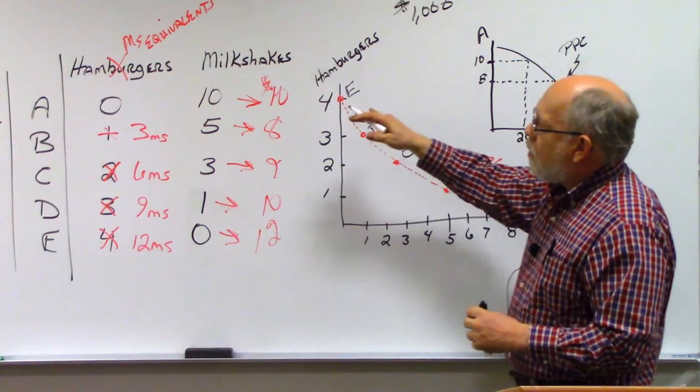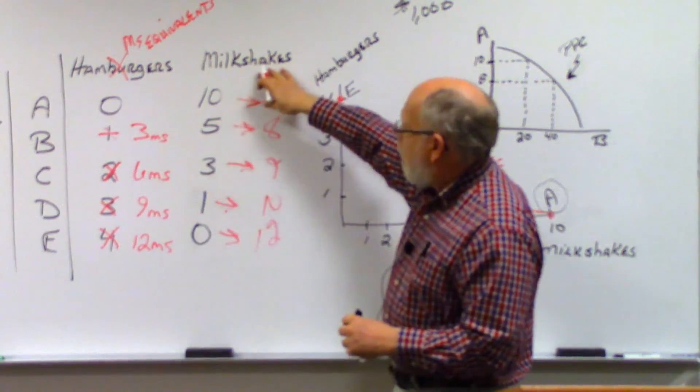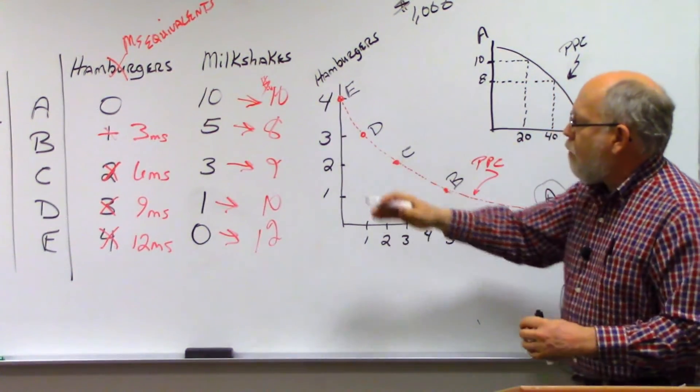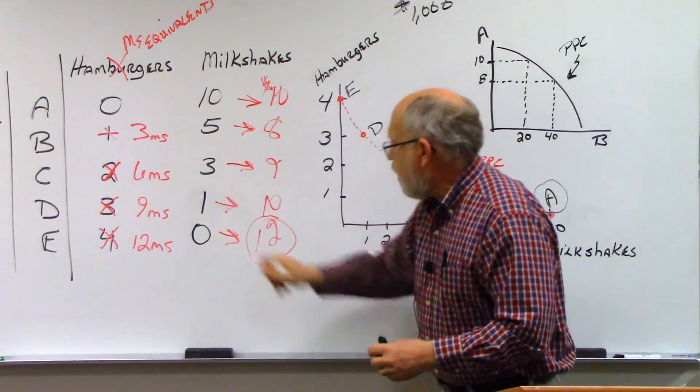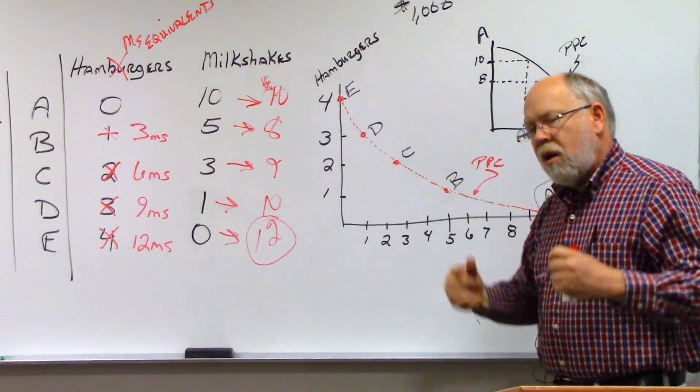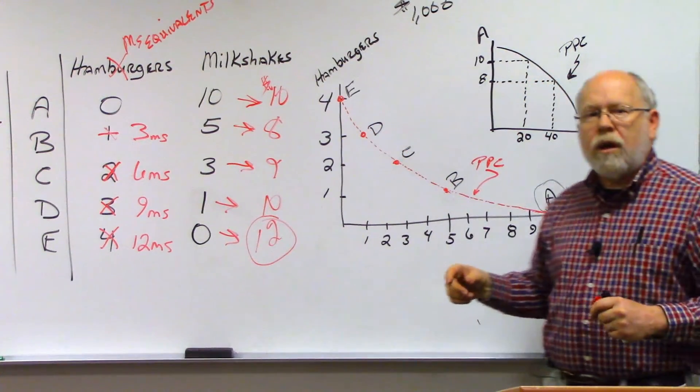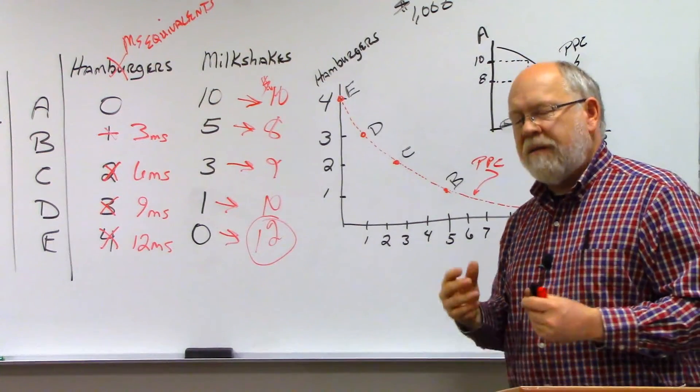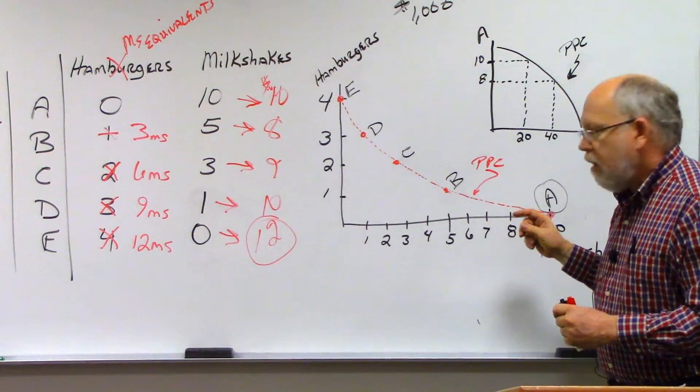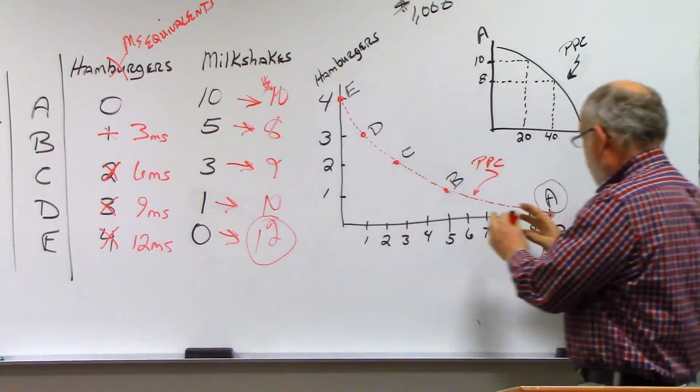So in this case, we would take one of the two, in this case, hamburgers, and convert it to the other milkshake, milkshake equivalents, and then re-add together to come up with the maximum dollar amount. In this case, we would want to produce 12. Now notice again, we're working as hard as we can possibly work to be on the production possibility curve says we are at maximum productive efficiency. Where we are on that curve would be allocative efficiency. Where should we allocate our resources? More to hamburgers or more to milkshakes?